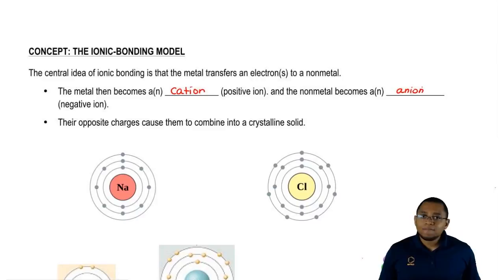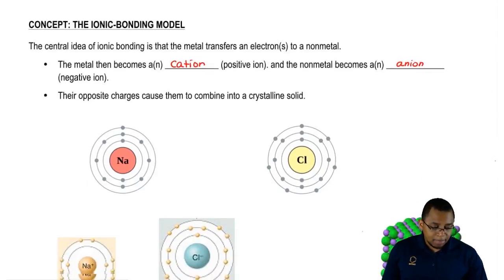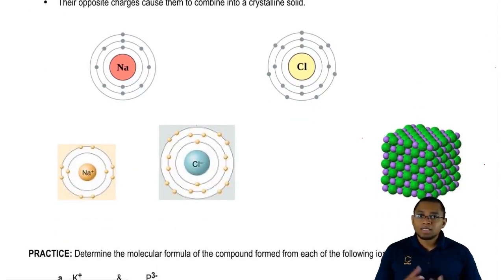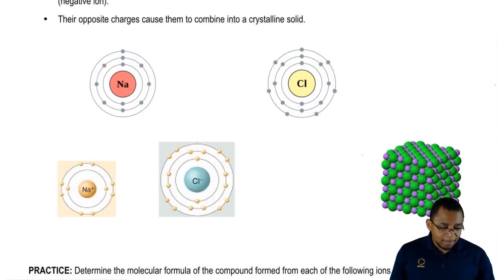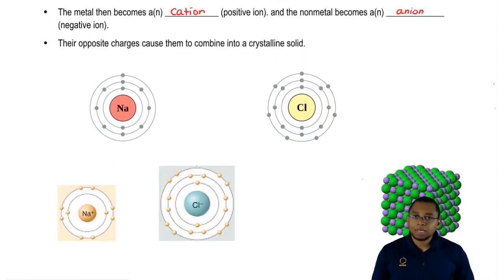Anytime we form an ionic compound, it's going to form into a solid. Our ionic compound is going to form a solid compound. Here, we have an example of sodium and chlorine. Remember, sodium is in group 1A, chlorine is in group 7A.